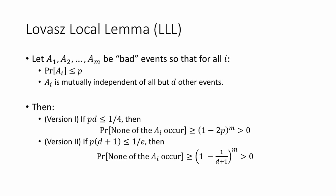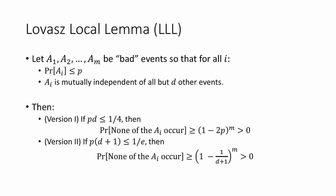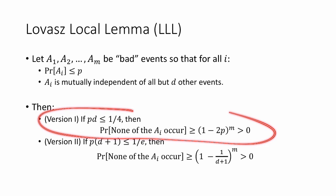It says that if we have a collection of bad events a1 through am, so that for all i the probability of ai is at most p, and the event ai is mutually independent from all but d other events, then intuitively, if the bad events aren't too dependent — meaning that d is small enough compared to 1 over p — then there's a positive probability that none of the events occur. Formally, we saw two different versions of the Lovász Local Lemma. In this video, we're just going to prove the first version.